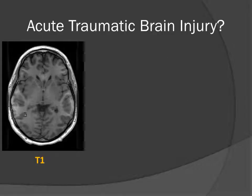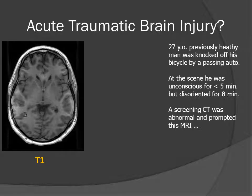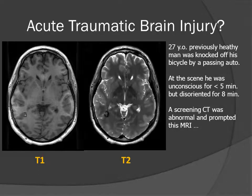We have here a 27-year-old, previously healthy young man, who was knocked off his bicycle by a passing automobile. At the scene, he was unconscious for less than 5 minutes, but was disoriented for 8 minutes. A screening CT was abnormal and prompted this MRI.